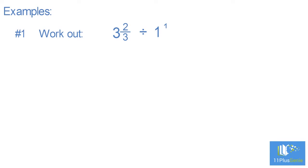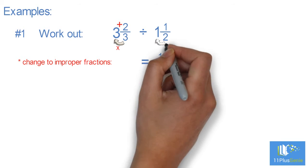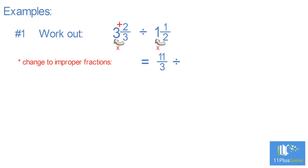Work out 3 and 2 thirds divided by 1 and a half. Change to improper fractions. To change to an improper fraction, we do 3 times 3 add 2, which gives us 11 over 3. Then 2 times 1 add 1 equals 3 over 2.